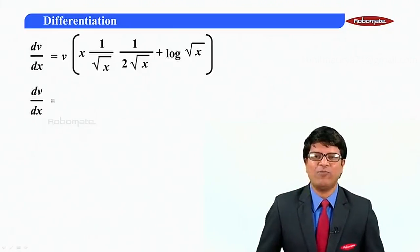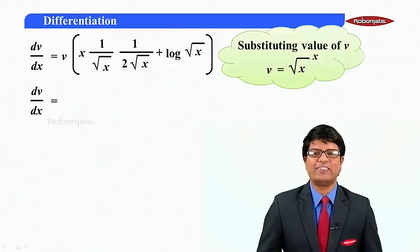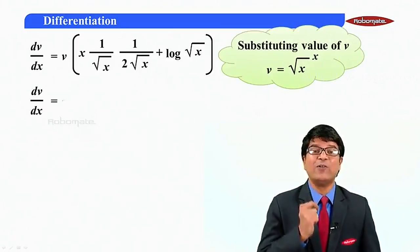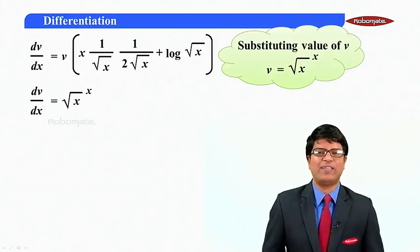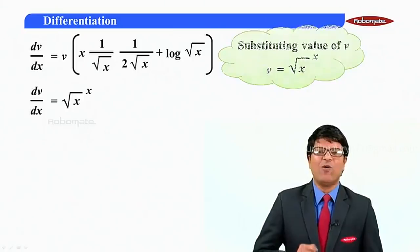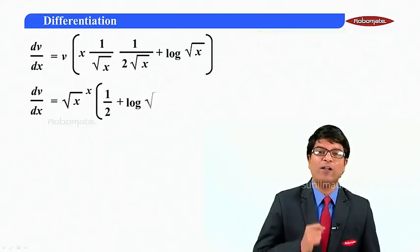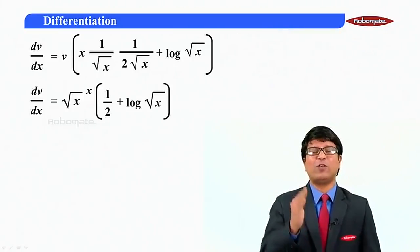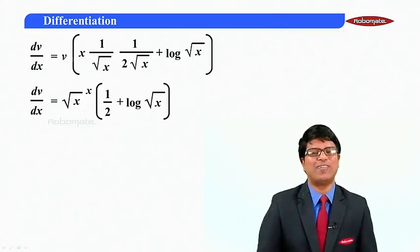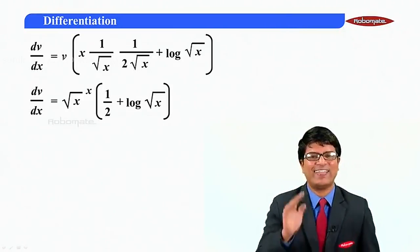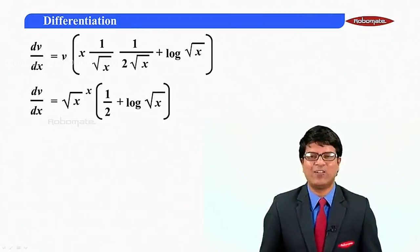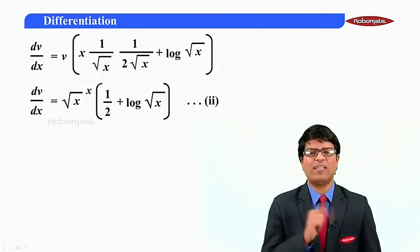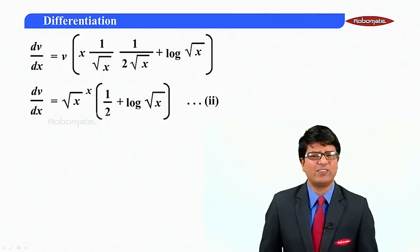Resubstituting the value of v as root x raised to x: root x times root x is x, so x cancels out, giving one upon two plus log of root x. So dv by dx equals root x raised to x times the quantity one half plus log of root x. Name it as the second equation.